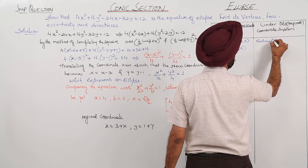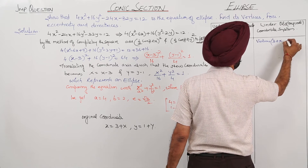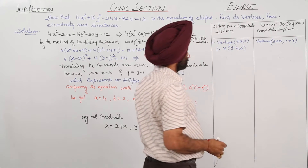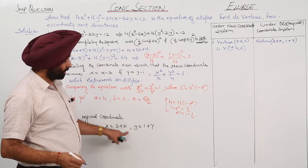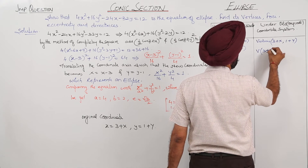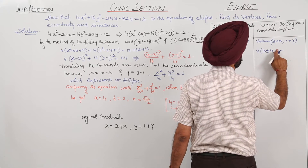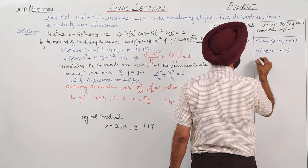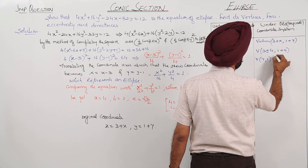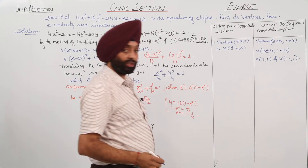Converting back to original coordinates using x = X + 3 and y = Y + 1, the vertices become (3 ± 4, 0 + 1), giving us (7, 1) and (−1, 1).